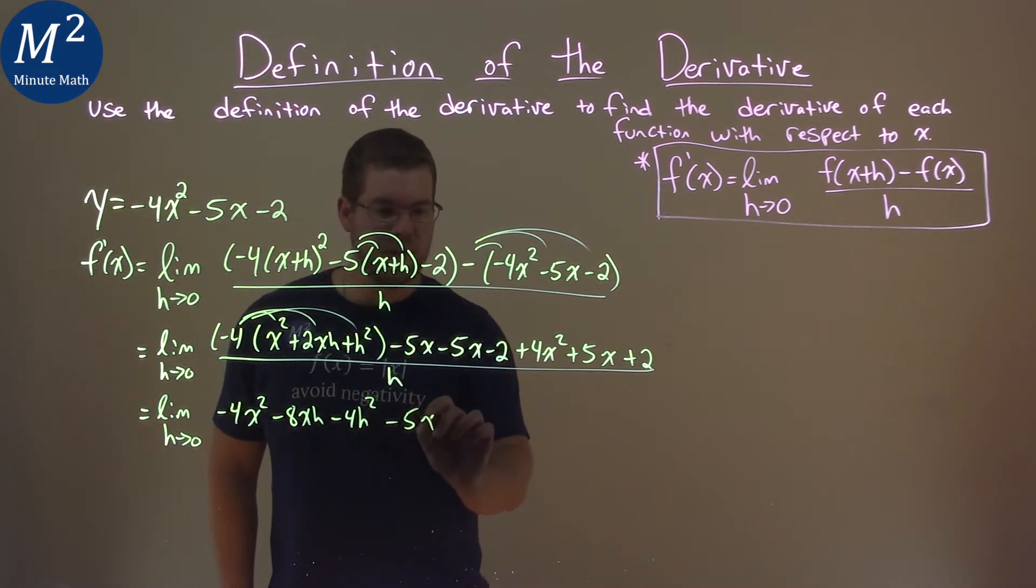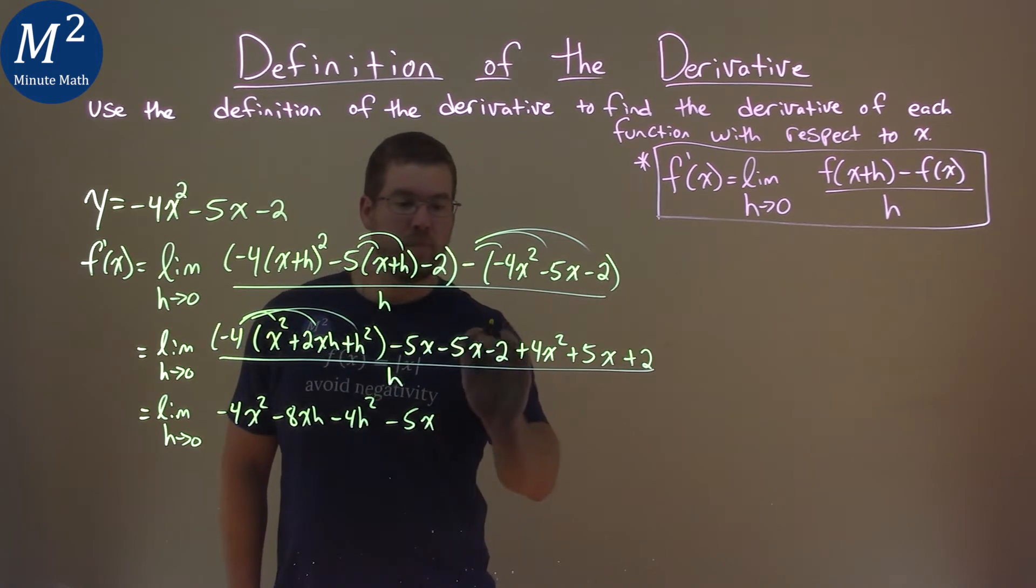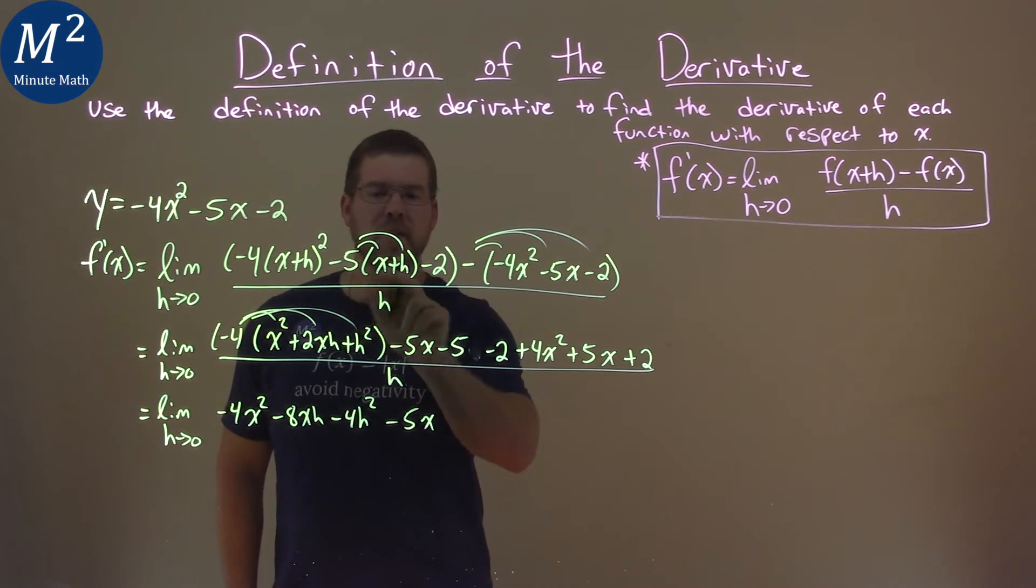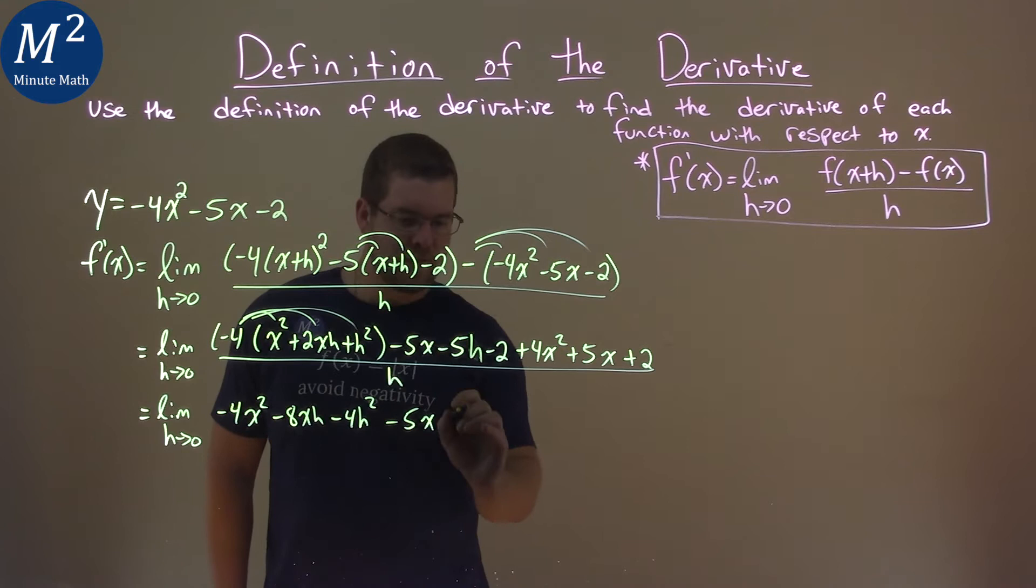Now, minus 5x. Oh, I messed up right here. See? If you saw that, let me know. This is an h, right? Negative 5 times the x, negative 5 times the h. Almost messed up there.